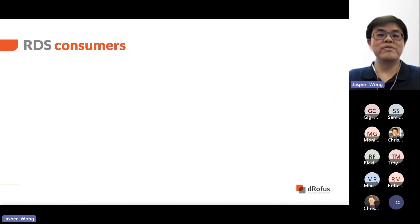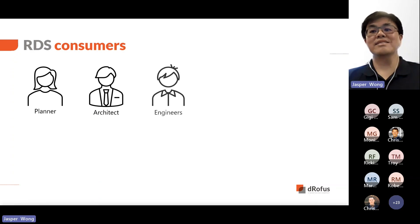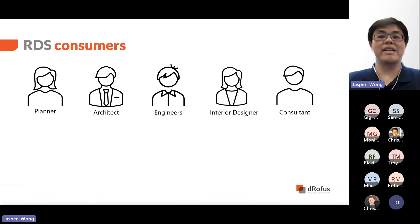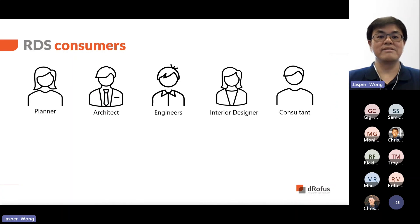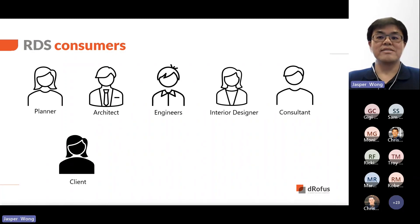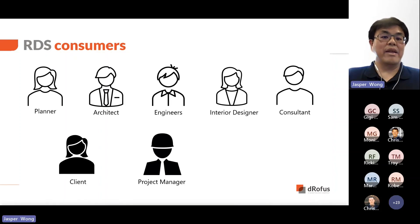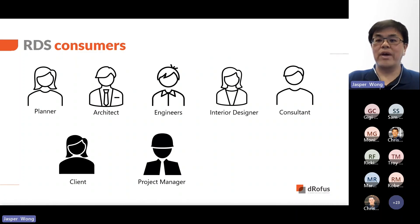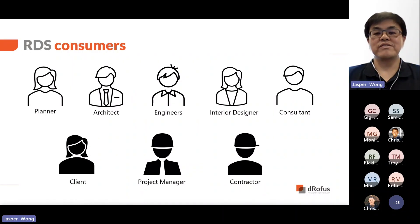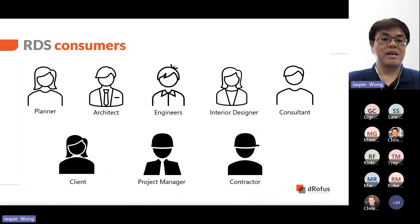Many stakeholders contribute to the development of information in a Room Data Sheet. The planner, architect, engineers, and other members of the design team typically create and update this information, and also use it to inform their design. Other stakeholders that consume the data include the client — the Room Data Sheet fast-tracks the searching of information for the client to provide feedback to the team. A project manager is also interested as it provides a coordinated view of the information, which can help get client approval for any deviations from the project brief. A contractor uses the information during the construction phase for reference and cross-checking that individual room requirements are met. In other words, on many projects, the Room Data Sheet is supplying the 'i' in BIM.